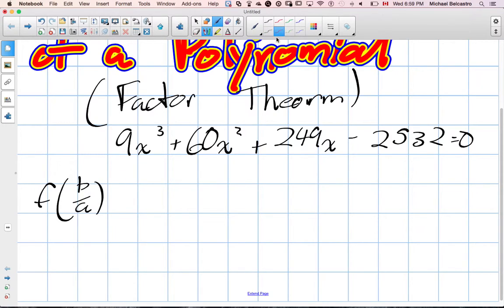And what are b over a? Your b value would be the constant at the very end of the polynomial, and your a value would be the leading coefficient. For this b over a, we want to find factors of those values.